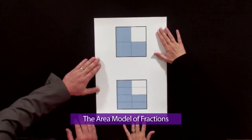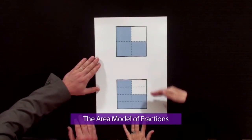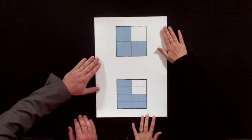We need to make sure that we have kids focus on the right things for each model. So let's do that. We're going to start with an area model. So we have two area models.